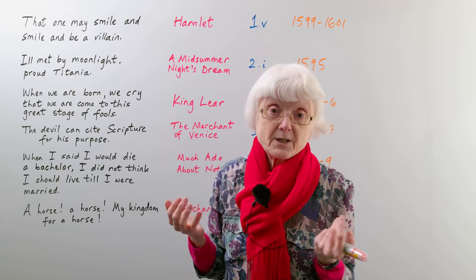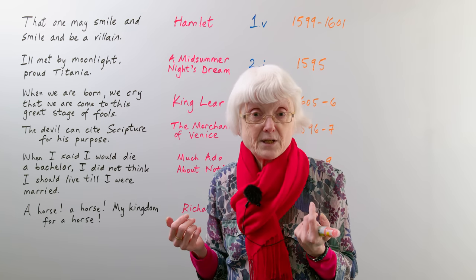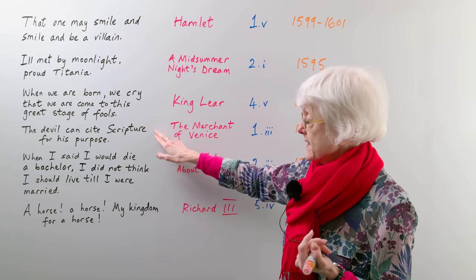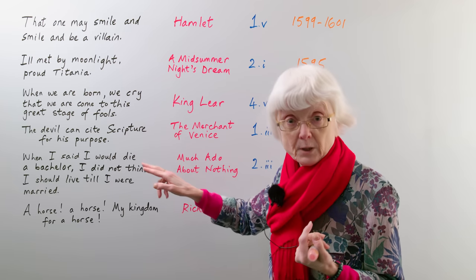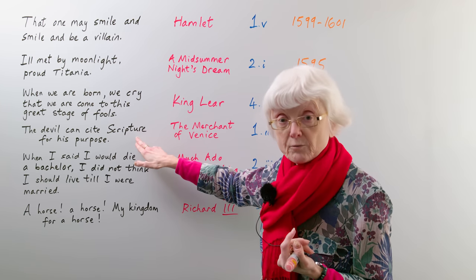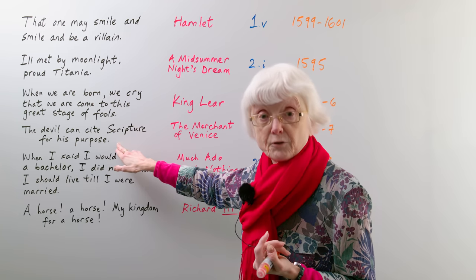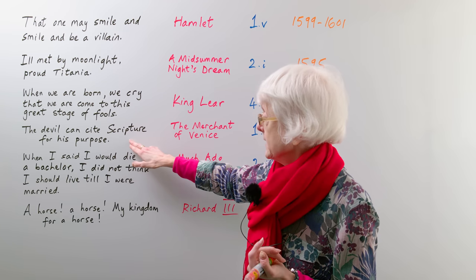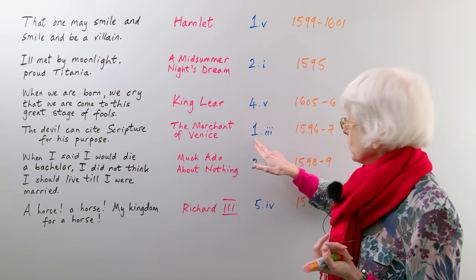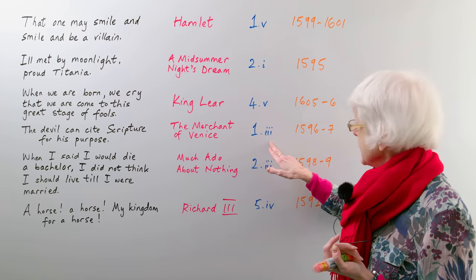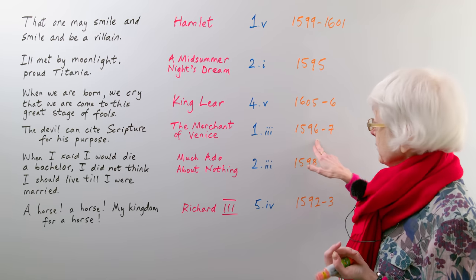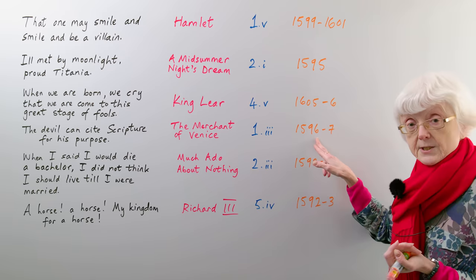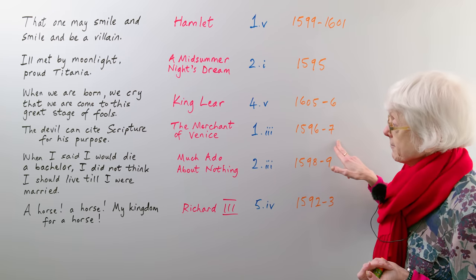It's quite a controversial issue, but that's what he's saying — a bad person can quote from the Bible for their own purposes. That's from Act 1, Scene 3, and that play was written 1596 to 1597.